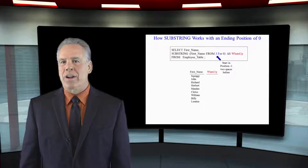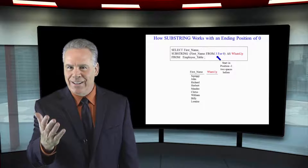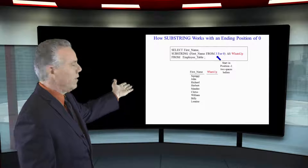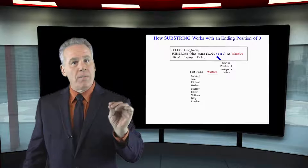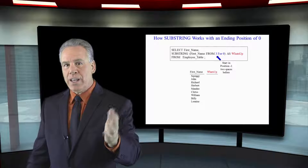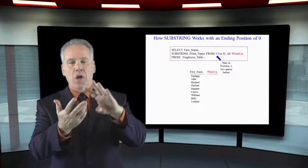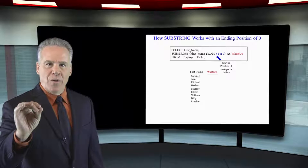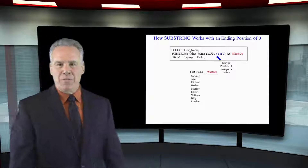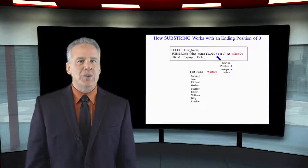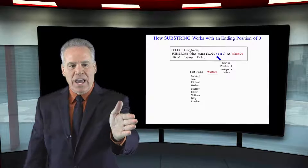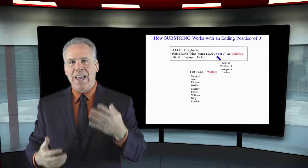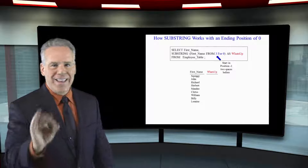Here's another point I really want to make. Selecting first name, then substringing first name from three — with squiggy we start at the U — but we're going for zero. So nothing comes back from the report. The substring has a starting position and then how many positions to return. If you put zero, nothing comes back.